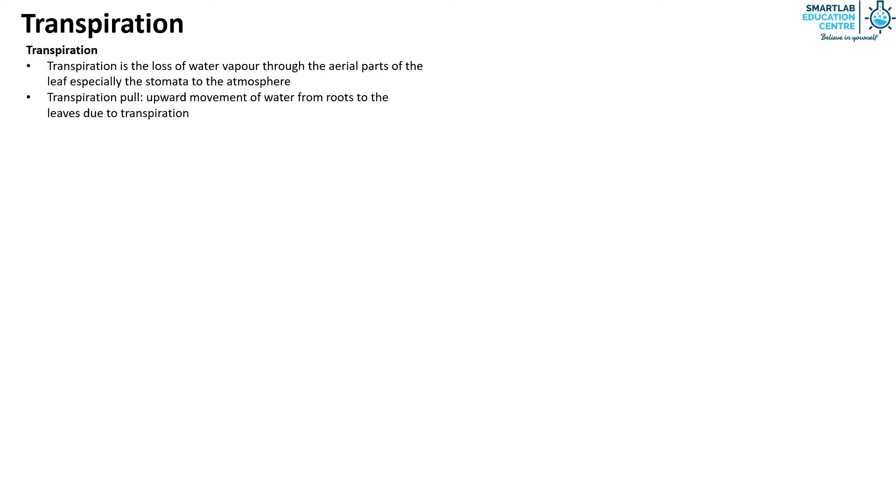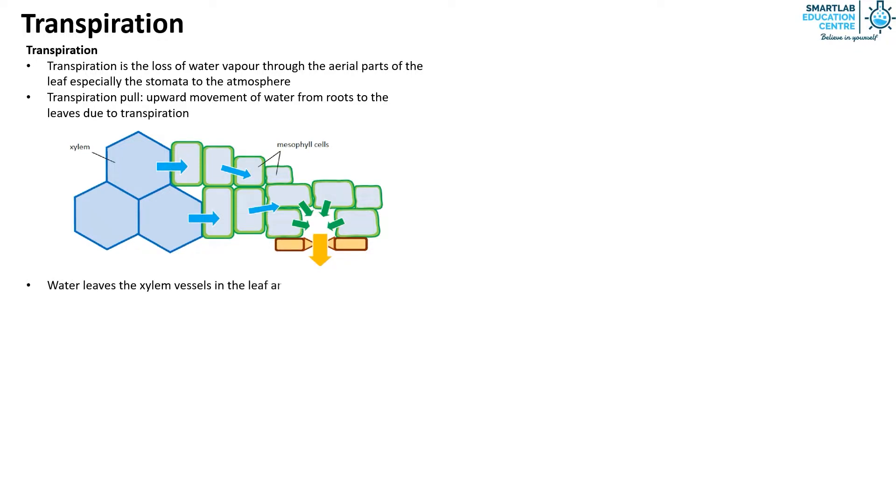So how does transpiration occur? First, water leaves the xylem vessels in the leaf and forms a water film on the walls of the mesophyll cells through osmosis. This water film evaporates into the intercellular spaces, increasing the humidity of the air inside the leaf. Thus, evaporation occurs at this point.